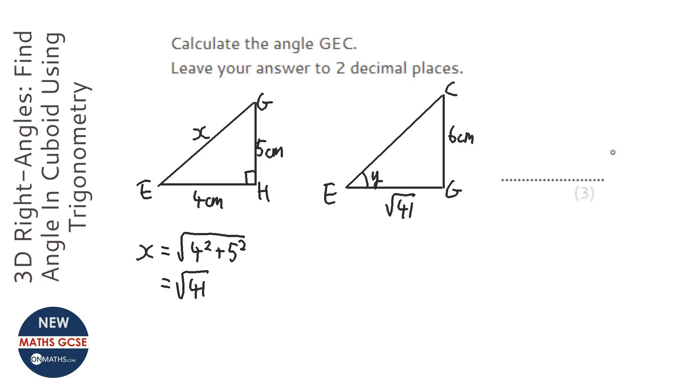So it's going to be tan Y equals the opposite, which is six, over root 41. So Y...